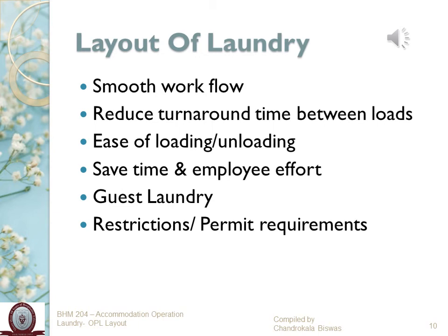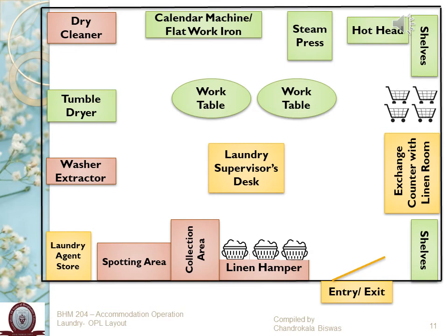Let's take a quick look at this simple sample laundry layout. There is only one entry and exit for security and safety of all articles processed inside. From the exchange counter with the linen room, all dirty linen comes into linen hampers and goes to the linen collection area. Articles needing immediate attention for stain removal go to the spotting area. Then fabric goes to the washer extractor where it gets washed and extra moisture is extracted. Fabric that needs to be dried completely goes to the tumble dryer — for example, all bath linens go to the tumble dryer, then to the work table for folding, rested briefly on the shelf, and then back into the linen room for circulation.